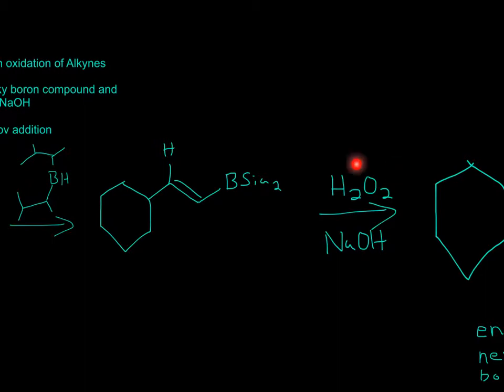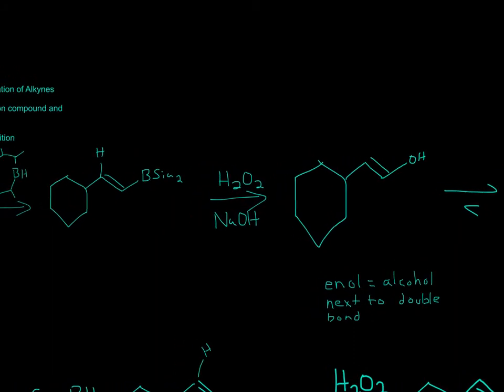So what the H2O2 does is it just gets rid of this part, the BCa2. Then what the NaOH does is, the Na doesn't matter, but the OH will attach right there. So H2O2 gets rid of this, and then OH replaces it. And that's what we get, an OH right there.